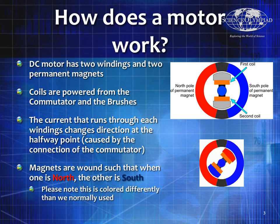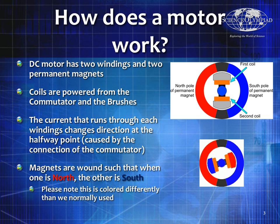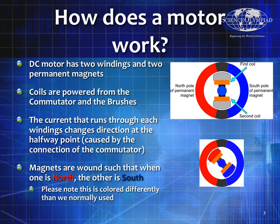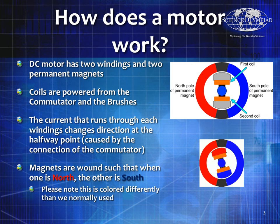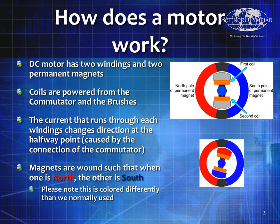Last class we talked about how a motor works and how a DC motor has usually two or three windings but two permanent magnets, and they use the commutator and the brushes to alternate the current on the windings on the armature, which is part of the rotor. This changes it from north and south pole so that the motor is both pushing and pulling as it goes around, as shown in the diagram to the right.